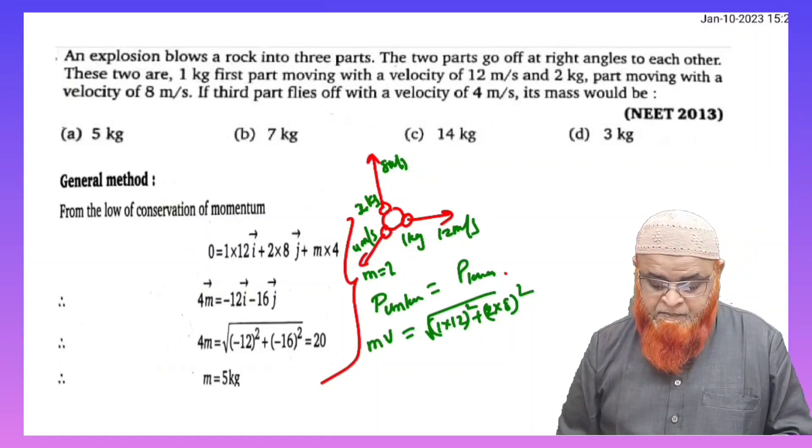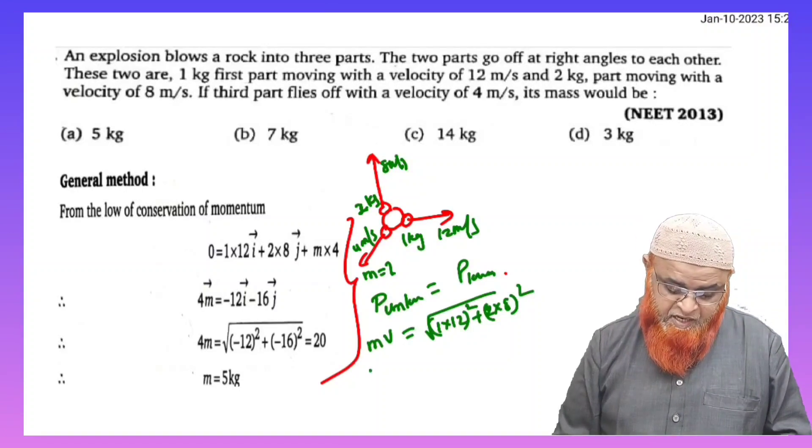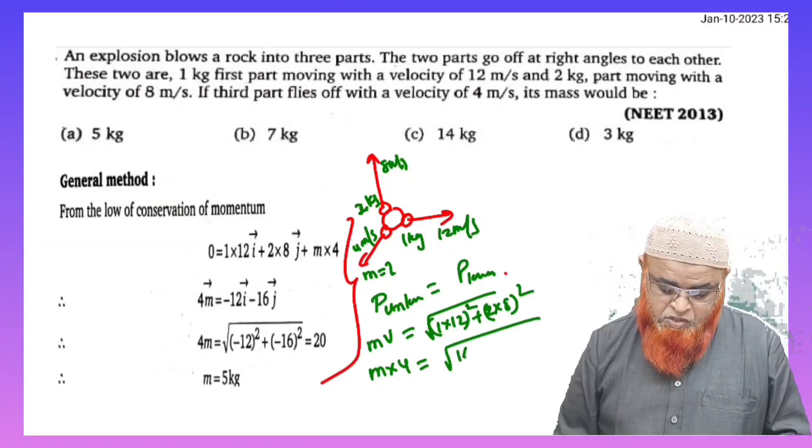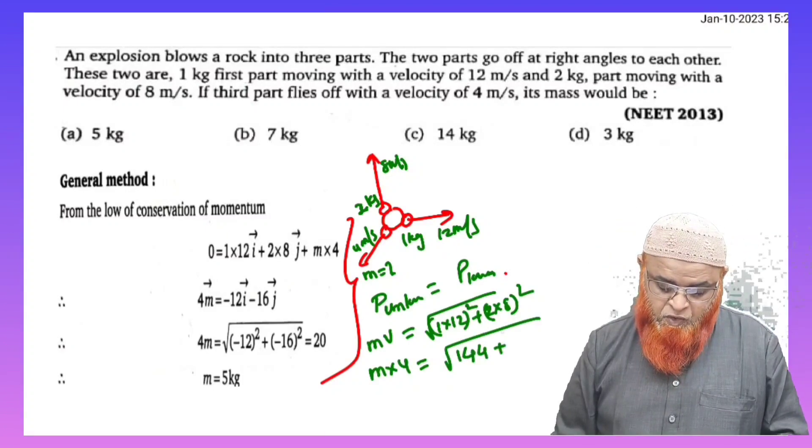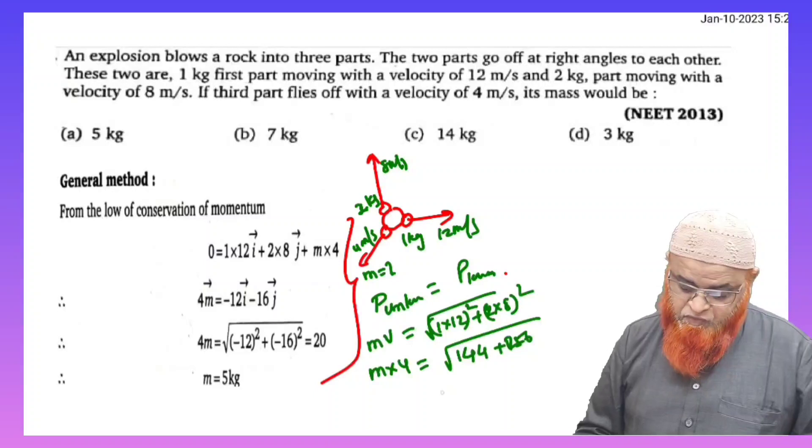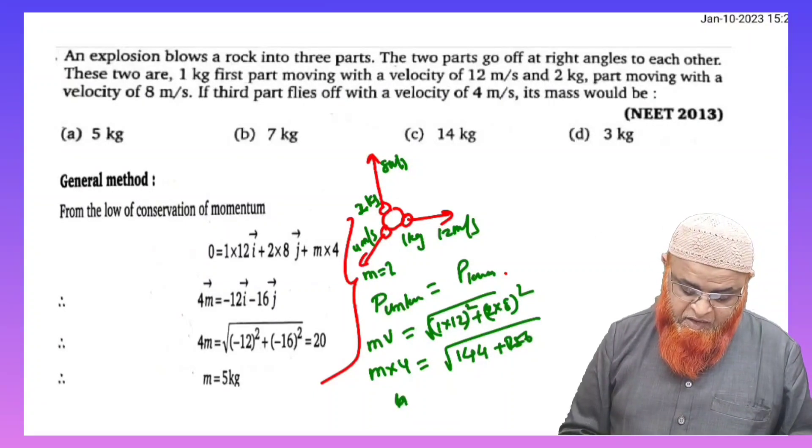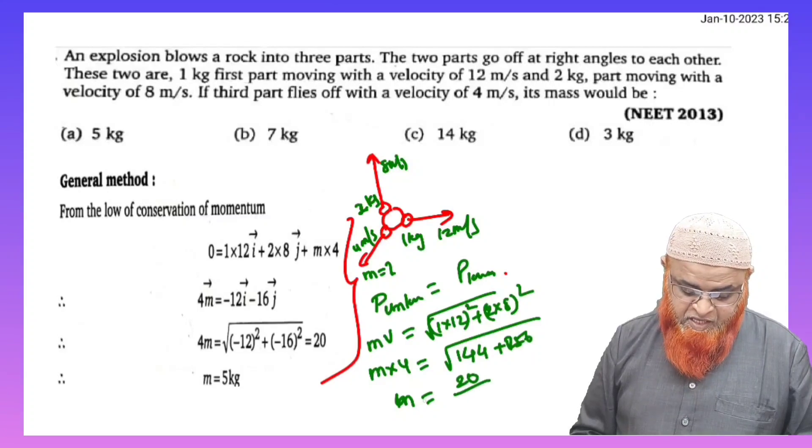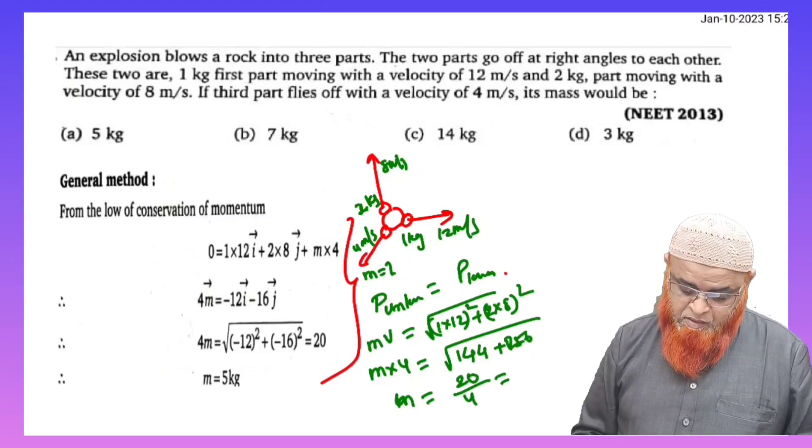And it is also given here velocity of the third block. What is the velocity of the third block? It is given as 4 meters per second. Therefore m into 4 is equal to square root of 144 plus 256. After simplifying you have to find out the mass here that is nothing but 20, and the answer is m = 5 kg. So we got the mass of the third block as 5 kg.